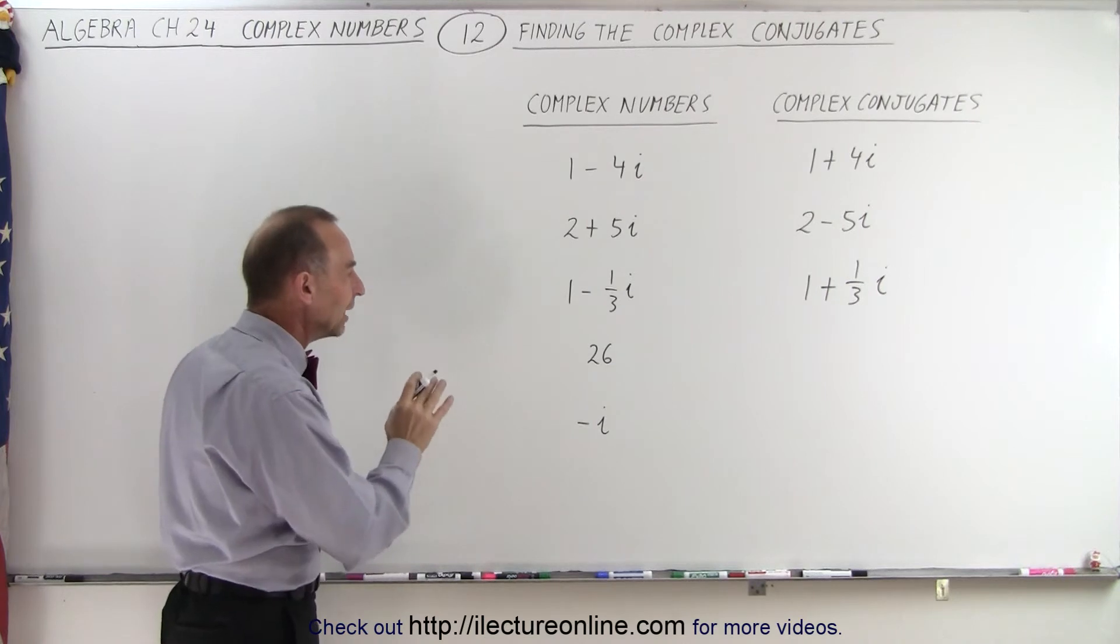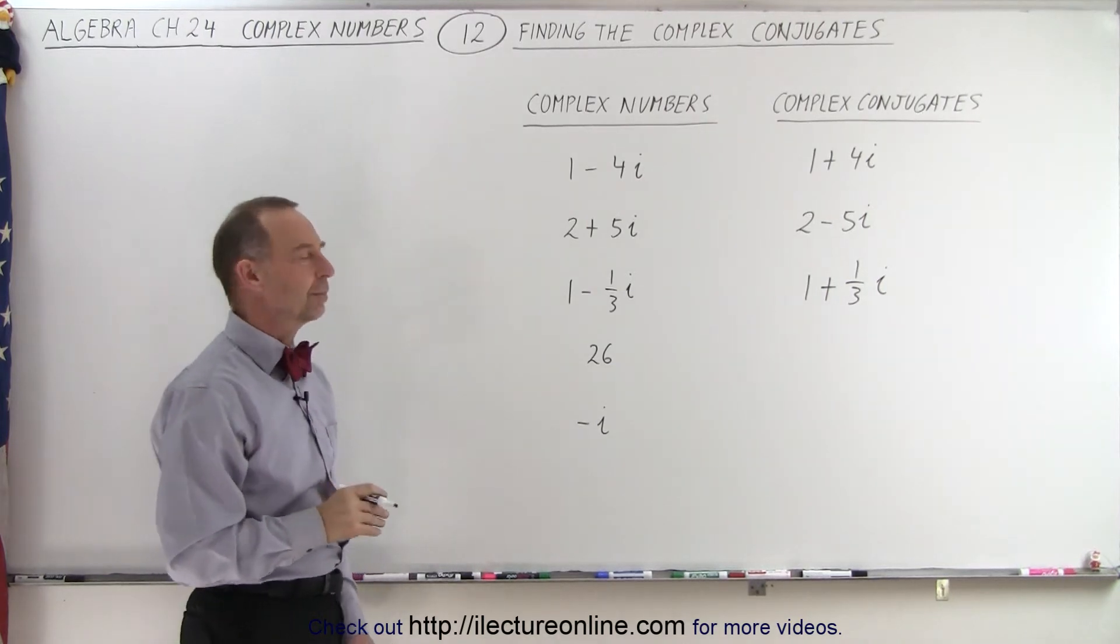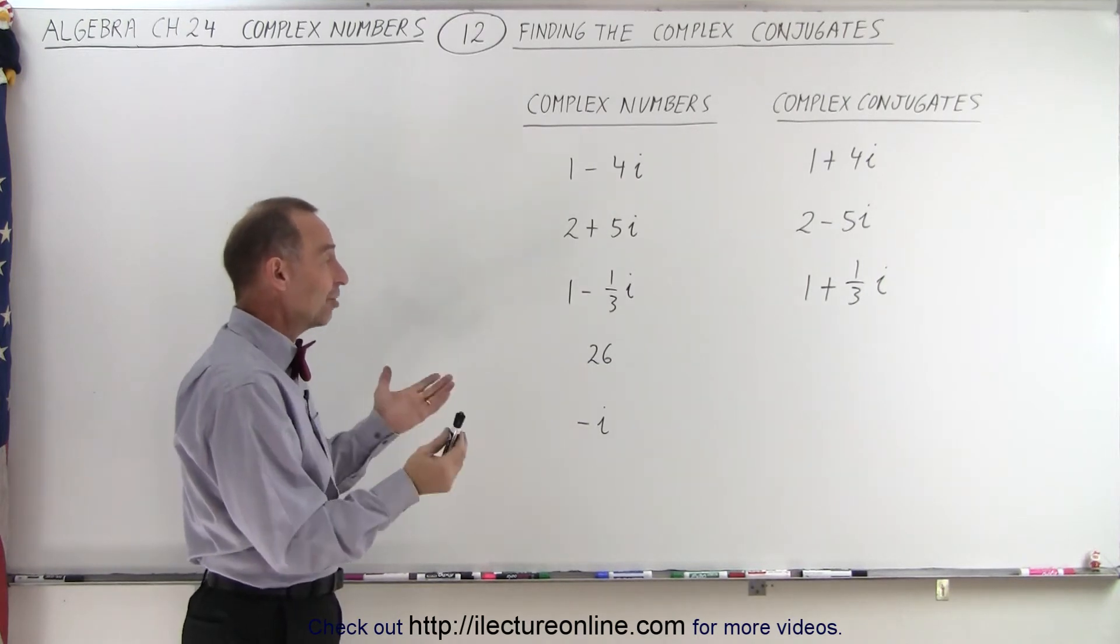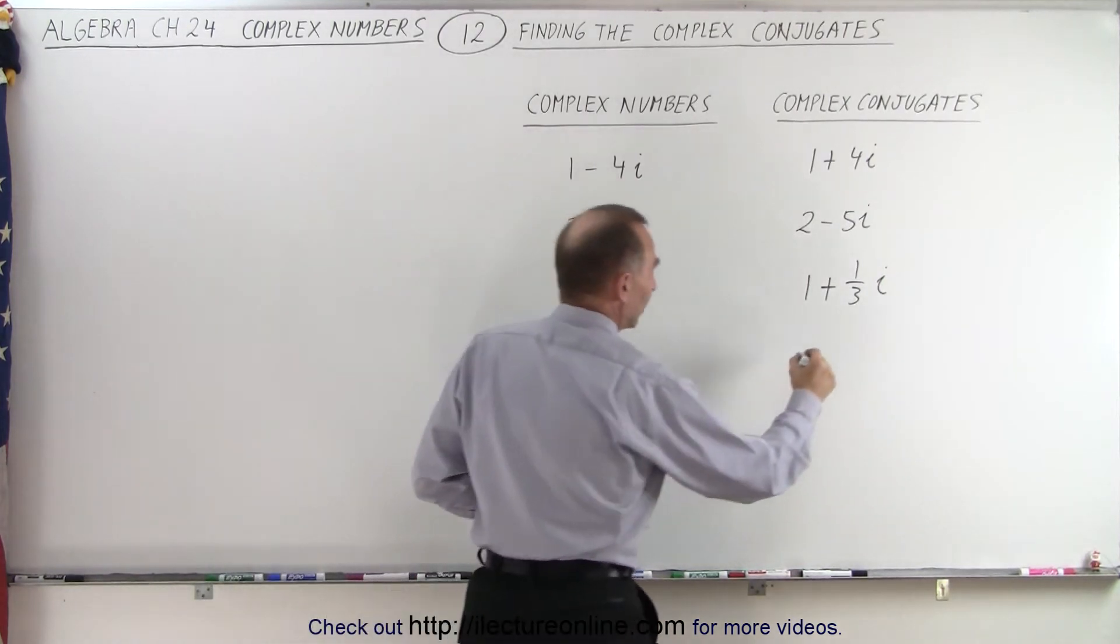But what if we only have the real part of the complex number? Well, then we don't have a complex number, we simply have a real number. And then we don't have to change anything. That's simply equal to 26.